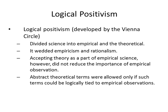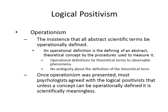Logical positivism developed from what they call the Vienna Circle. It divided science into empirical and theoretical, and wedded empiricism and rationalism together — accepting theory as part of empirical science, but without reducing the importance of empirical observation. Abstract theoretical terms were allowed only if they could be logically tied to empirical observations. This should sound somewhat familiar — we're talking about operationism: the insistence that all abstract scientific terms be operationally defined.